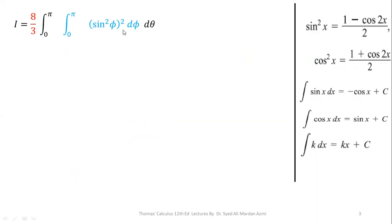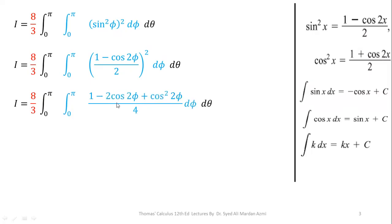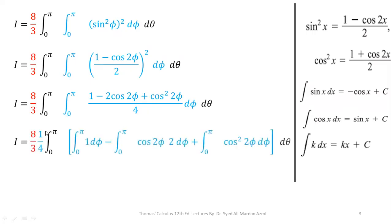Sine squared phi can be written as (1 minus cos 2phi over 2) whole squared, so sine to the power 4 phi becomes that whole expression squared. Opening up the square, we have 1 minus 2 cos 2phi plus cos squared 2phi, all divided by 4. The square of 2 becomes 4. Now this 4 can be cancelled with the 8 over 3. We take 1 over 4 outside and apply the integral on each term: integral of 1 d phi, minus integral of 2 cos 2phi d phi, plus integral of cos squared 2phi d phi, all for limits 0 to pi.